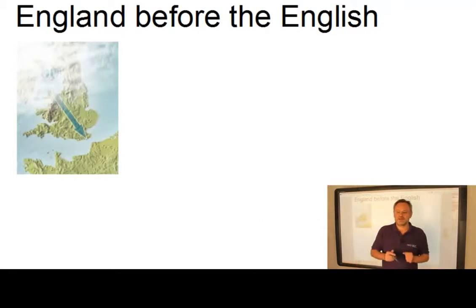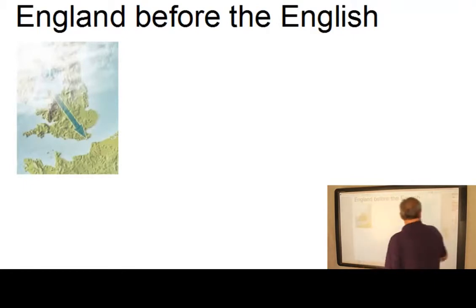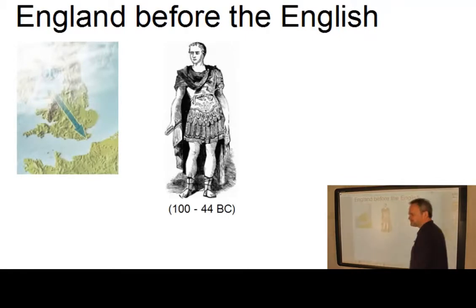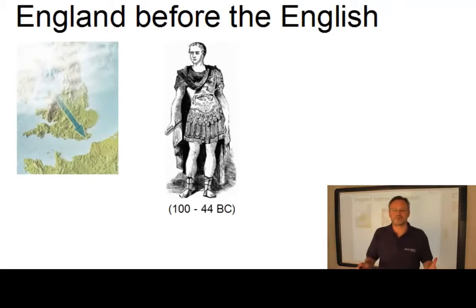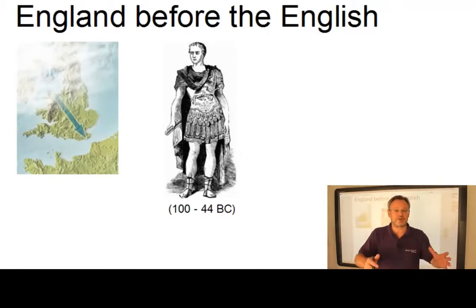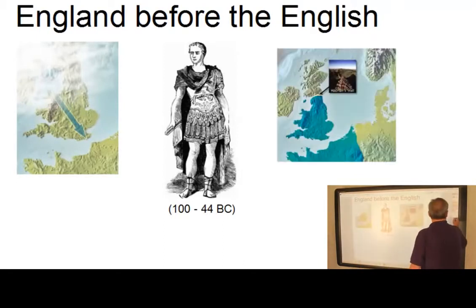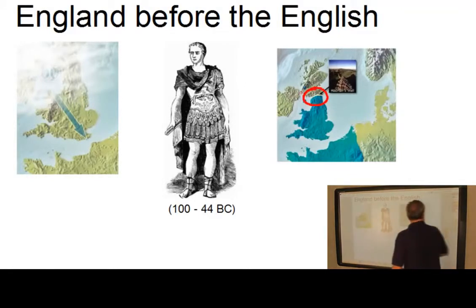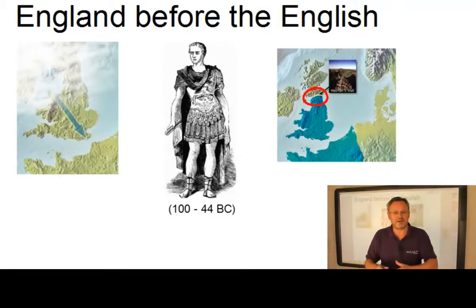The Celtic languages were dominant on the British Isles until the birth of Jesus Christ. Beginning in 55 BC, Julius Caesar, the Roman Emperor, made several attempts to invade Britain, but it was not before 50 BC that most of the land was under Roman control, except for the northern part, which remained unconquered. Hadrian's wall represents the borderline between the Roman Empire and the Celtic territory.